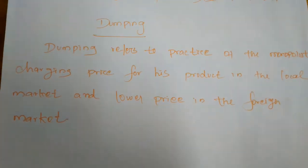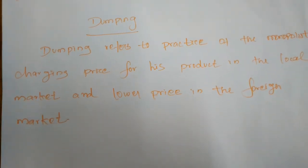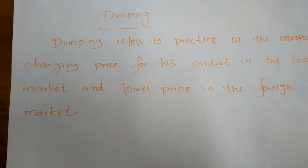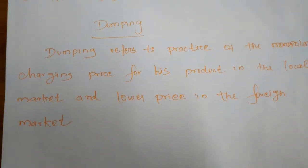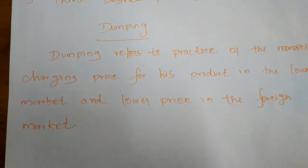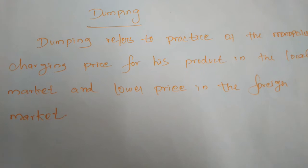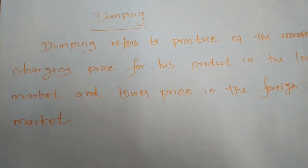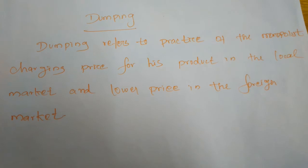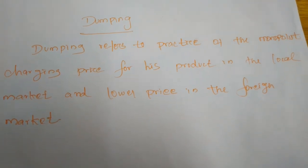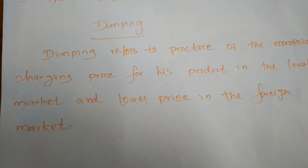Through dumping, a country expands its command over other countries for its product. This is also called international price discrimination — the price in the domestic nation is different from other nations. For example, India's electronic market is flooded with China's products, but China fixes very high prices in its own market and exports to India at lower prices. This practice of accumulating produced commodities domestically and exporting the same product to another nation at a lower price is called dumping.